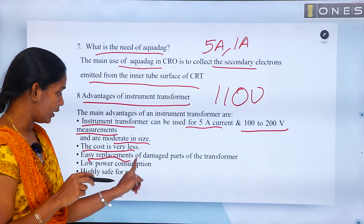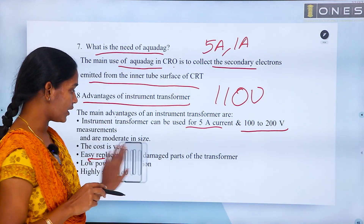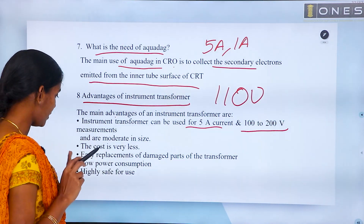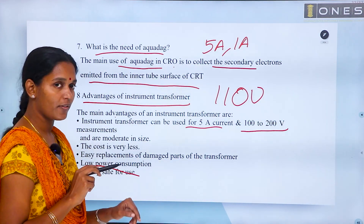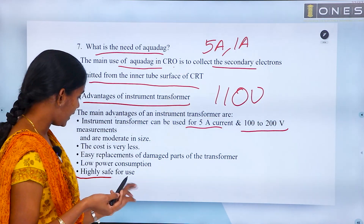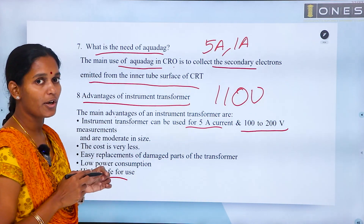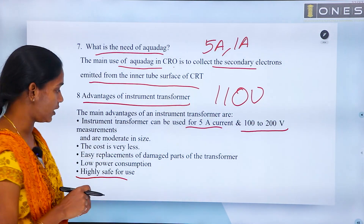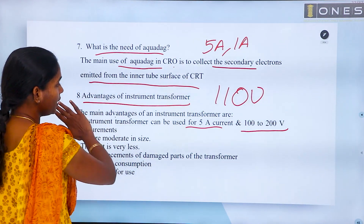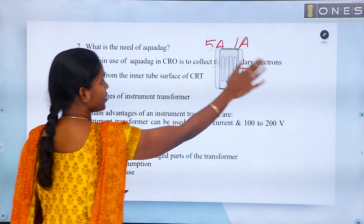Instrument transformers are easily replaced if damaged. They have low power consumption. They are highly safe for use. In the CT case, the secondary must be kept short-circuited for safe operation. These are the advantages of instrument transformers.